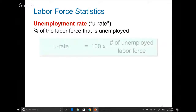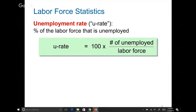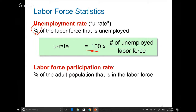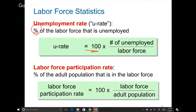Our unemployment rate is the number of people who are unemployed divided by the labor force, times 100 — so unemployment rate is always a percentage. And the labor force participation rate is your labor force divided by the adult population, showing what percentage of the population is currently in the labor force — either working or looking for a job.